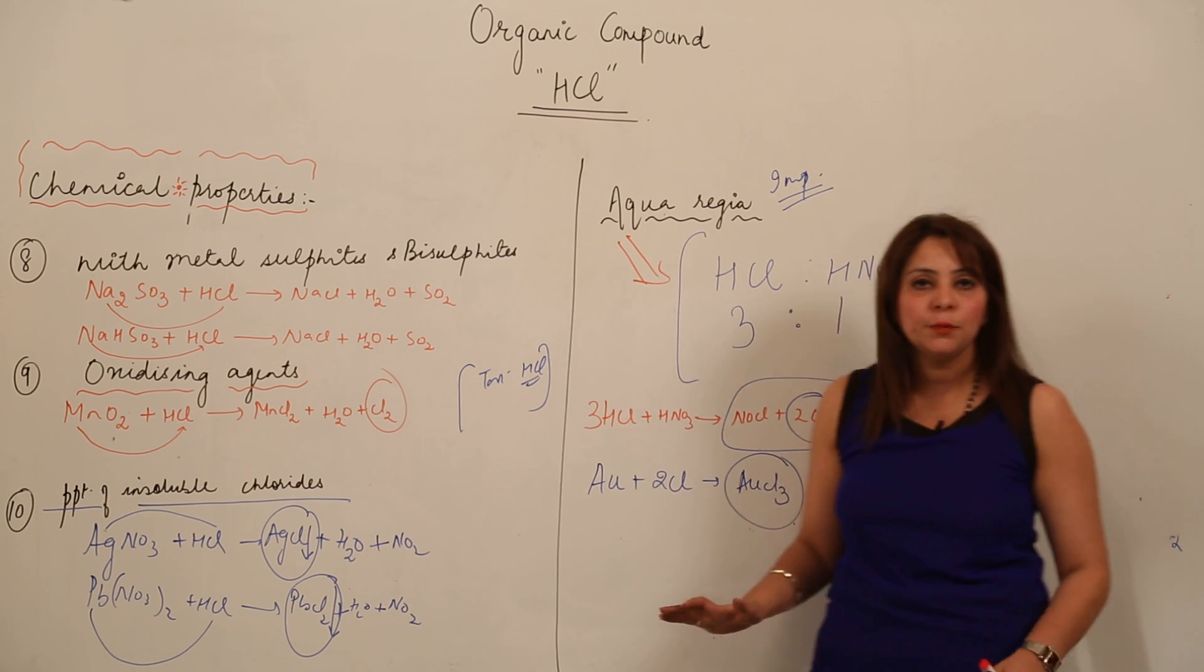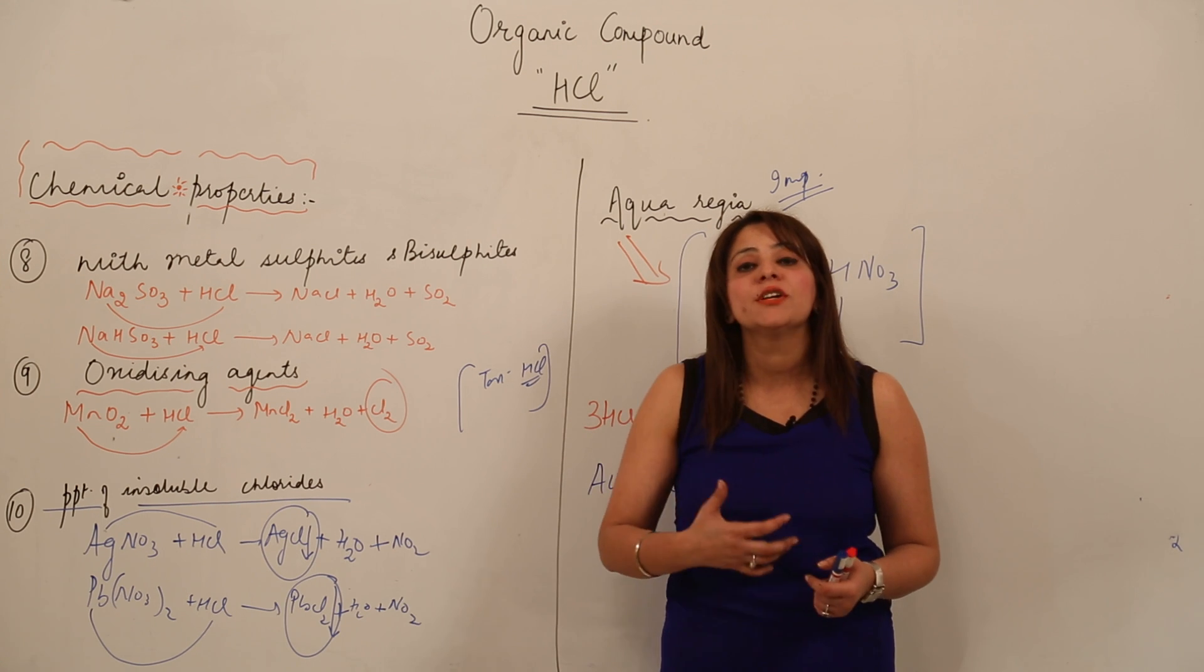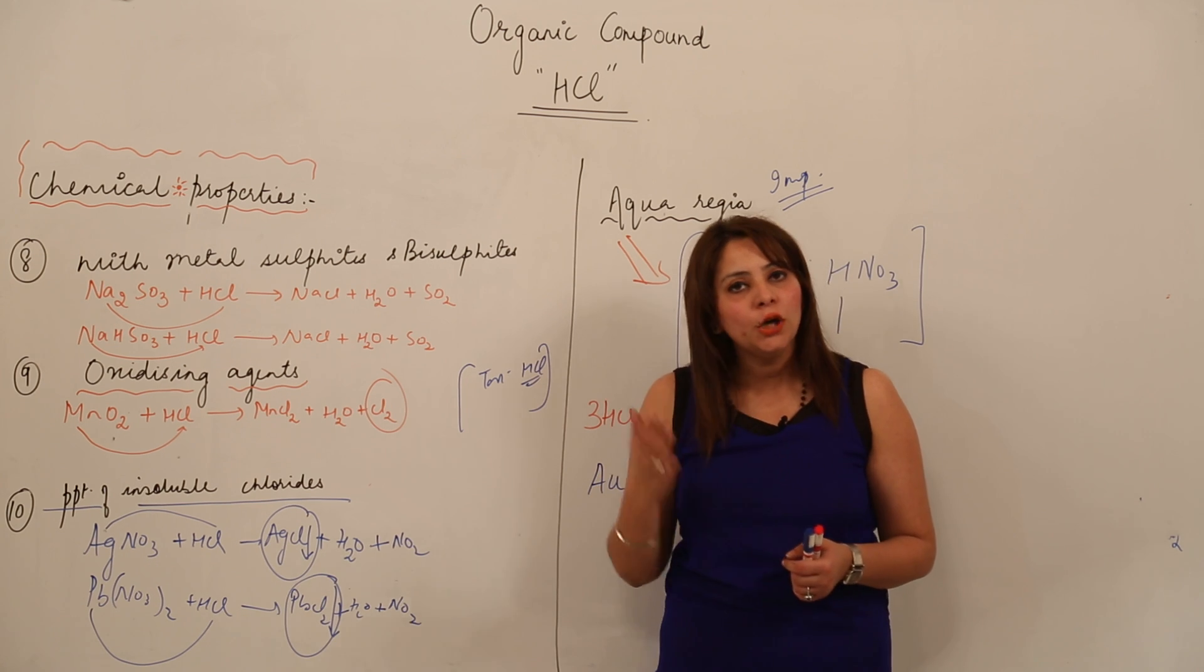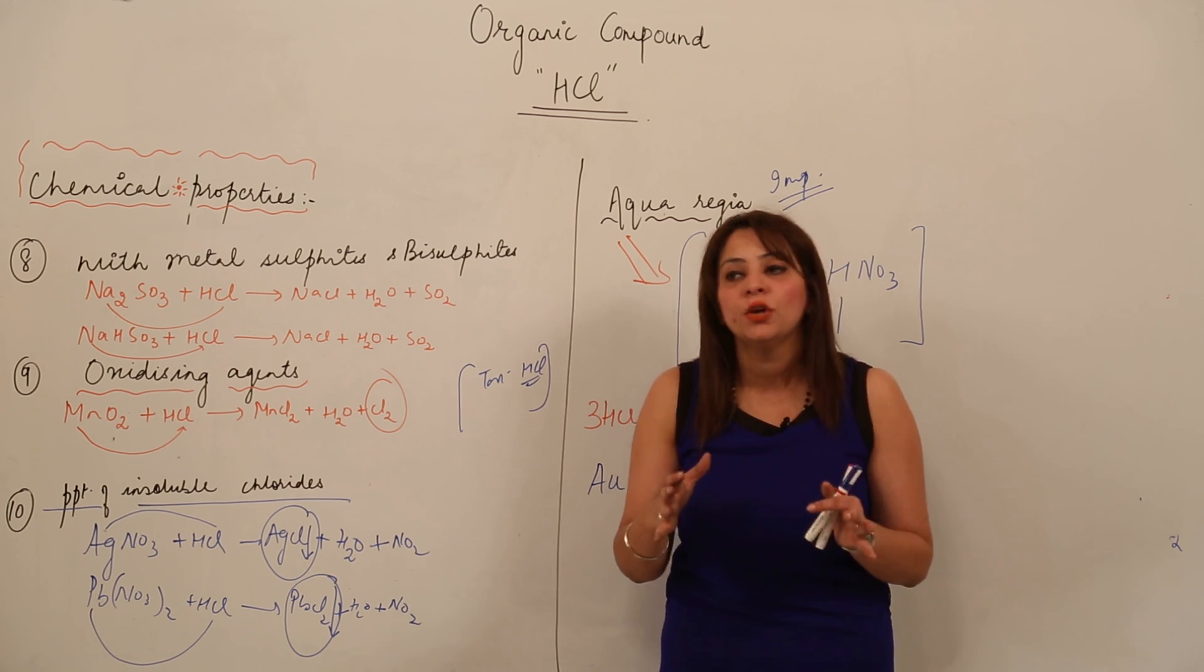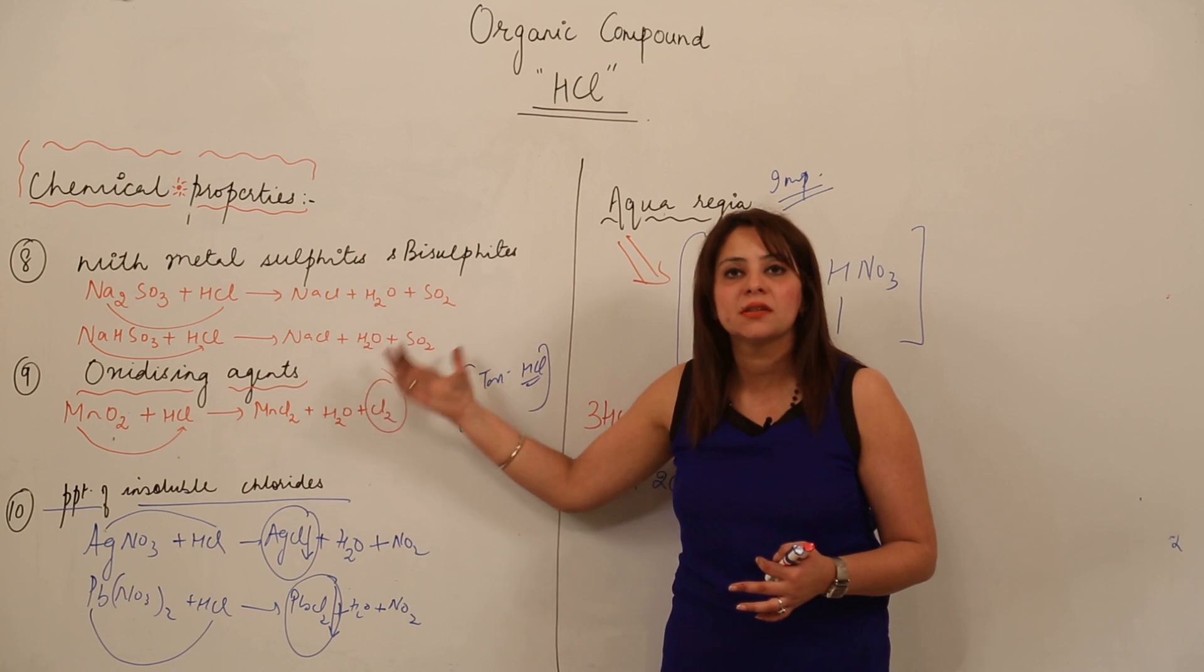These are the chemical properties. You have to keep in mind the valencies. When doing chemical reactions in chemistry, you need to be well-versed with valencies first. If you're not well-versed with valency, it won't be possible for you to do correct chemical reactions.